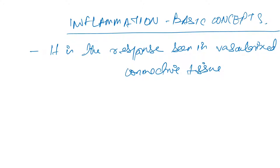We see the response after some injury or after some attack from a foreign antigen. For example, a thorn prick from outside — immediately you see blood pooling into your fingers, redness happens, then certain chemicals come in, and then there is some pain. These are all the symptoms of inflammation.